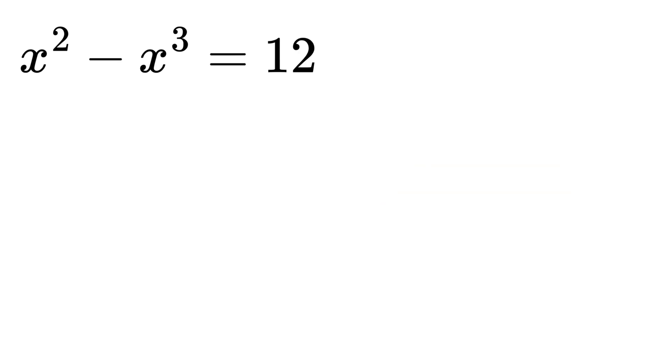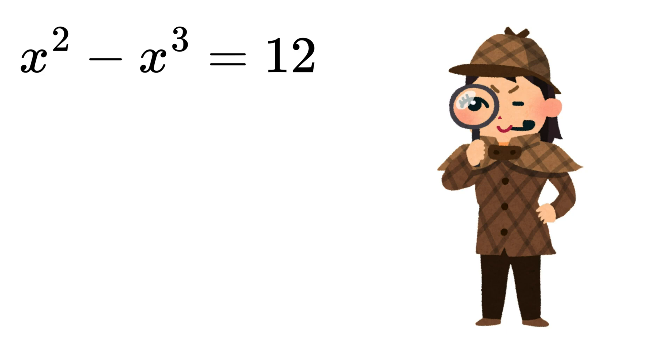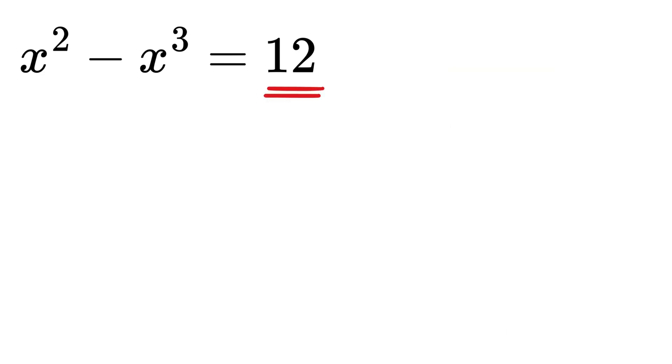As the very first step, if you observe it closely, you can see that 12 can be written as 8 plus 4. And what is 8? It can be written as 2 times 2 times 2, or 2 cubed, right? And also, 4 is 2 times 2, or 2 squared. So, this 12 can be written as 2 squared plus 2 cubed.